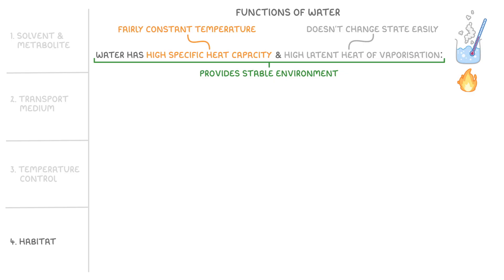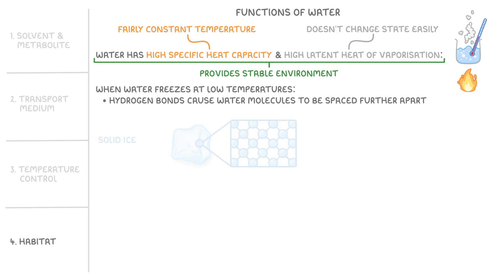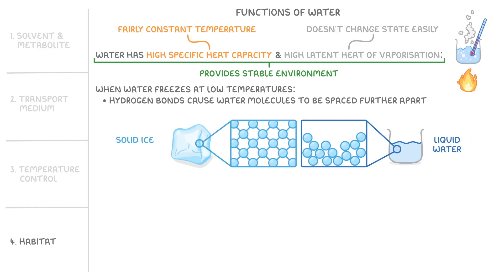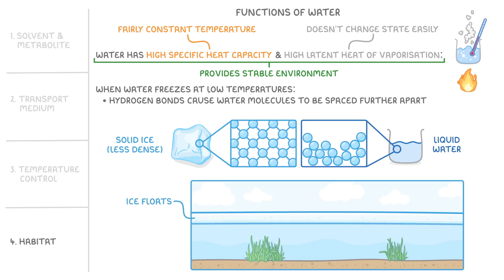Another feature that makes it useful as a habitat is that when water freezes at low temperatures, its hydrogen bonds cause the water molecules to be spaced further apart in solid ice than they are in liquid water, making the ice less dense than the liquid water. This means ice floats on top of water, which insulates the water below it and prevents it from freezing.